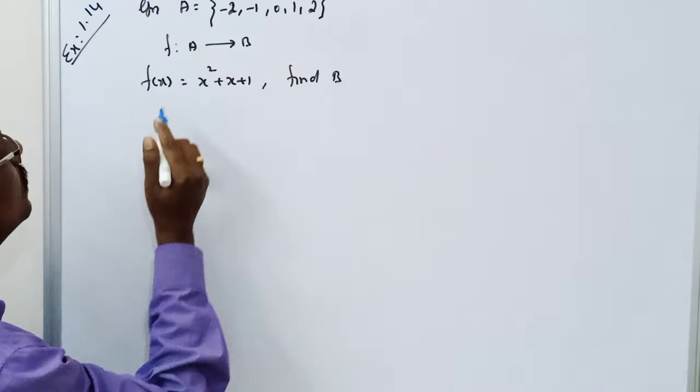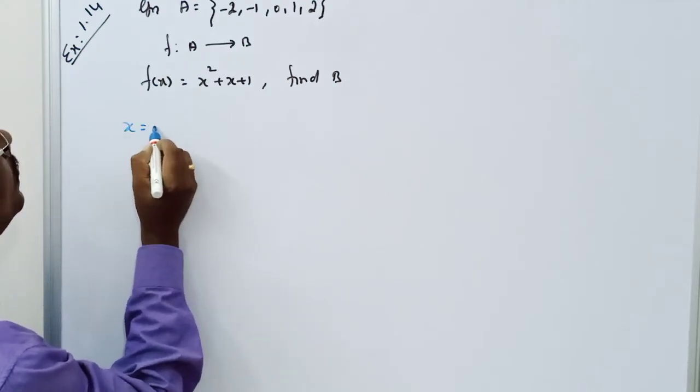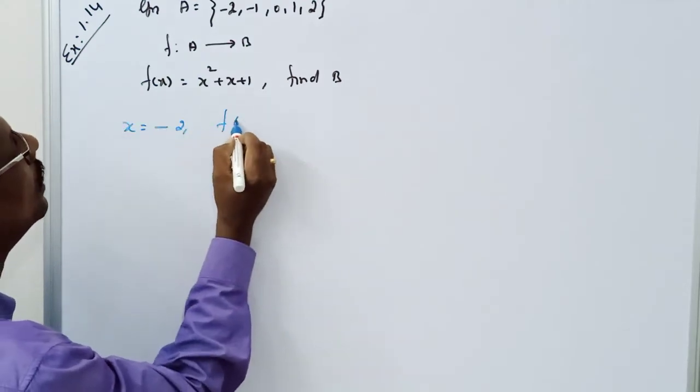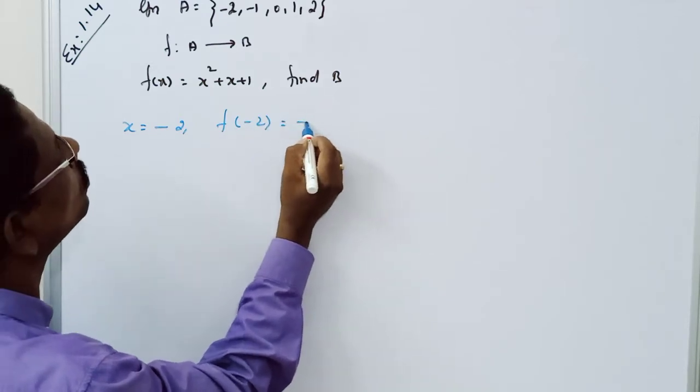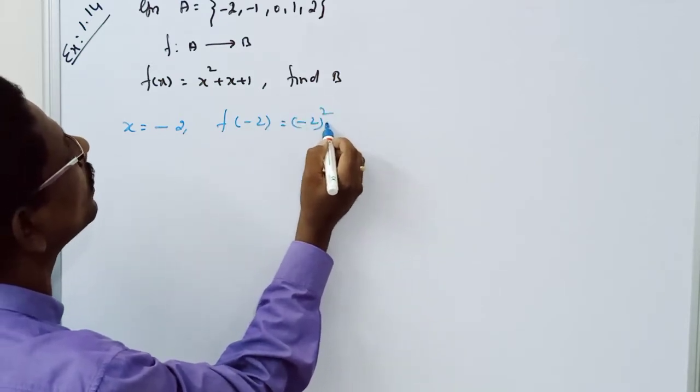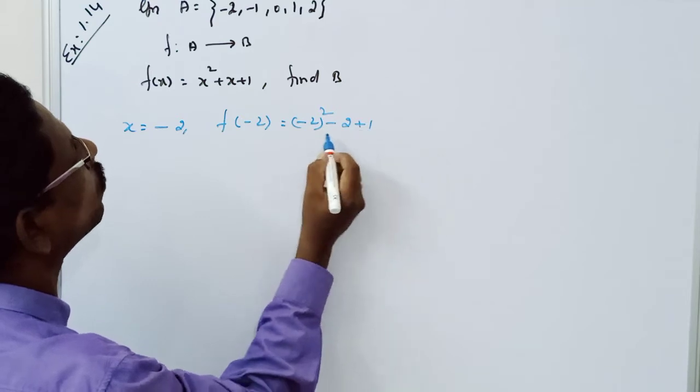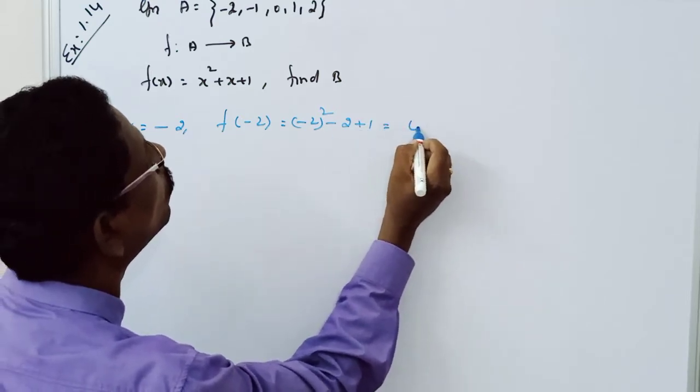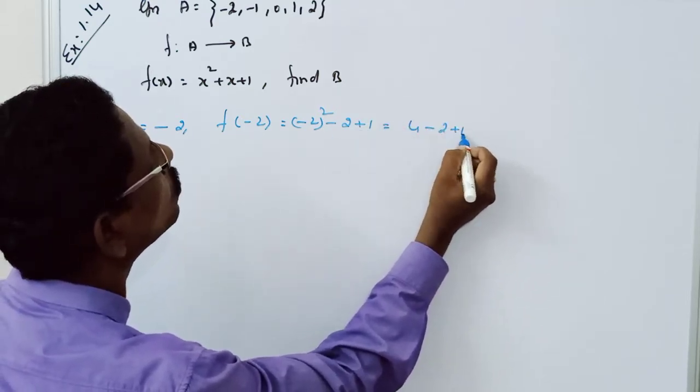First, when x is equal to -2, f(-2) is equal to (-2)² + (-2) + 1, which equals 4 - 2 + 1, equals 3.